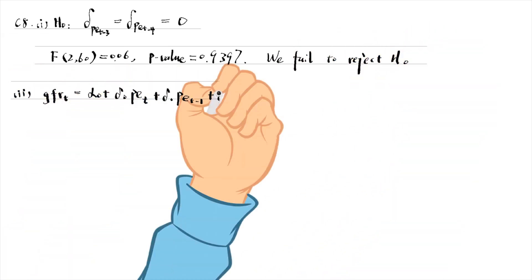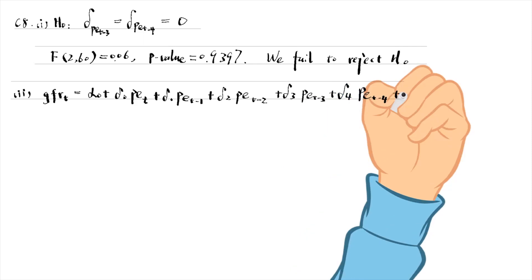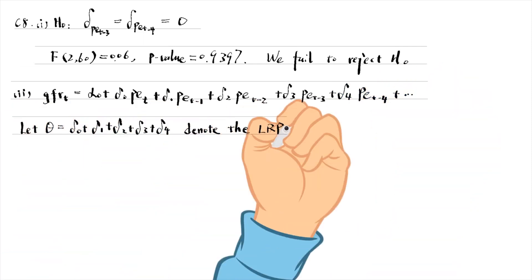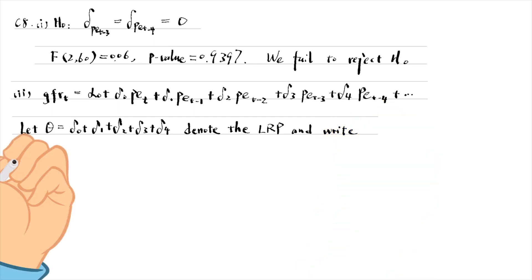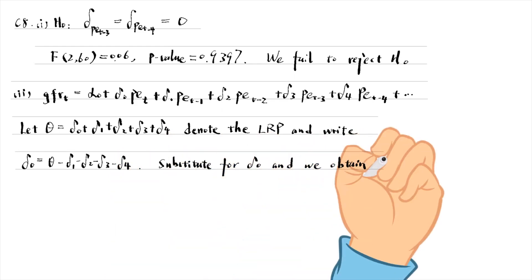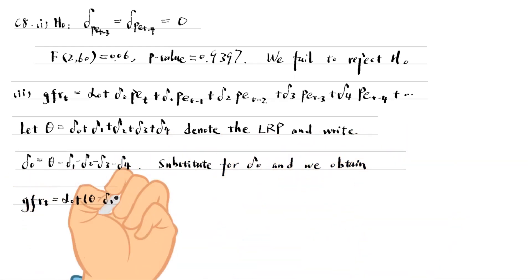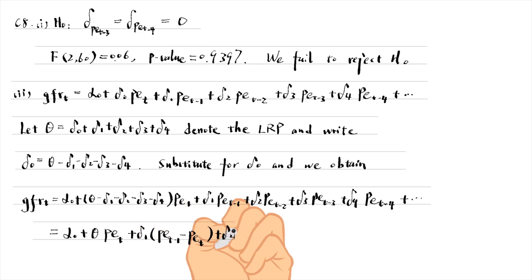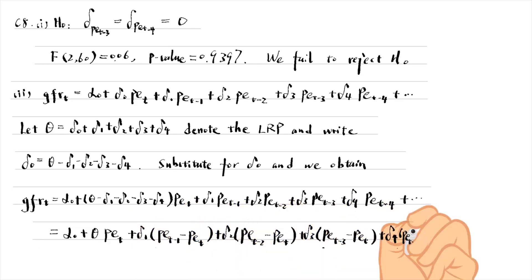In part 2, we follow the trick and let theta denote the long-run propensity. We write delta 0 in terms of theta delta 1 to delta 4. Substitute for delta 0 in the model and we obtain the new regression model. We generate 4 new variables, pd1, pd2, pd3 and pd4.